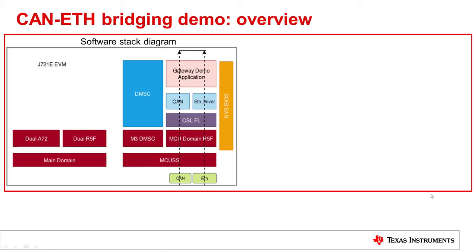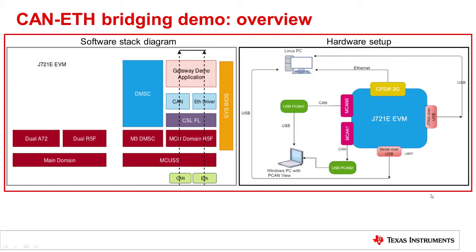Shown here is a system block diagram for the CAN-Ethernet bridging application. The CAN-Ethernet bridging application runs on the MCU domain R5F instance and is built on top of MCAL drivers for CAN and Ethernet modules. The bridging application is realized as a periodic polling task that services CAN and Ethernet packet queues independently populated by their respective drivers. The application uses IEEE 1722-based encapsulation for moving CAN packets over Ethernet. Two CAN instances from the MCU domain are used, and traffic is initiated from a PC host using the PCAN module for sending and receiving CAN frames. An Ethernet port from the MCU domain connects to a Linux PC where the host application runs, demonstrating full-duplex bridging between CAN-Ethernet and CAN-CAN modules.